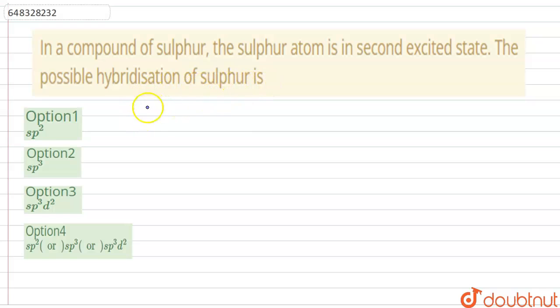So if we see the outer electronic configuration of sulfur atom, we will see that it has two electrons in 3s orbital and four electrons in 3p orbital.